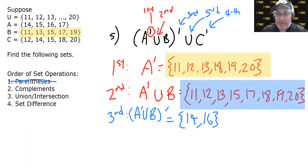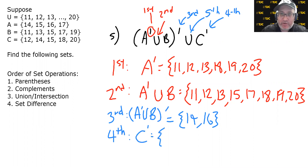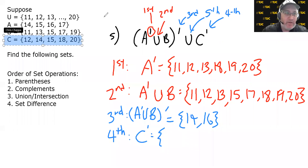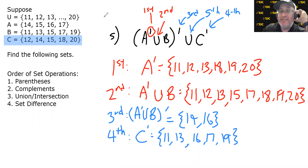Step four: find C complement. We look at the universe 11 through 20 and ask which numbers are missing from set C: 11 is missing, 13 is missing, 16 and 17 are missing, 19 is missing. So C complement = {11, 13, 16, 17, 19}.